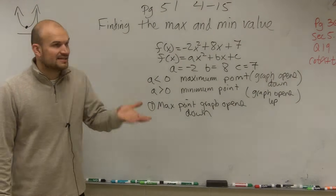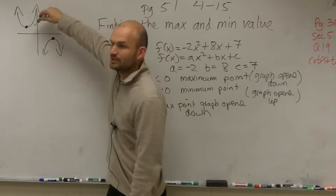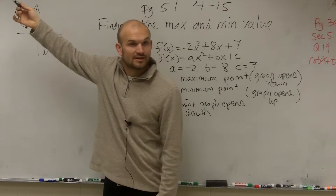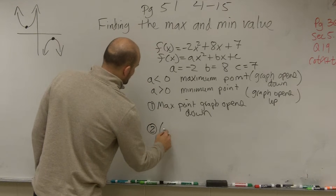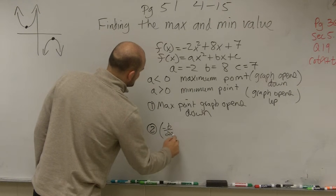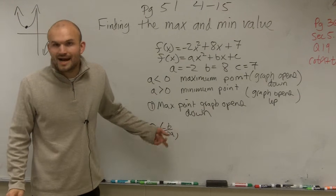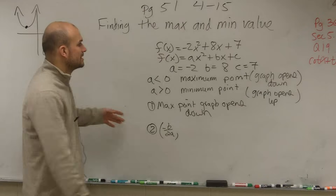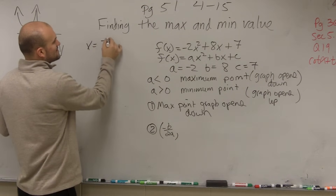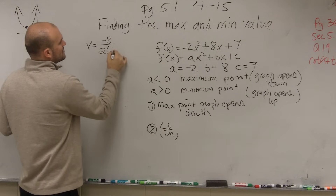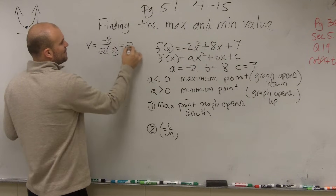The next thing is to define that point. Do you remember what this point is called? The vertex. Do you remember the formula for the vertex? It's a two-step process. The first point is opposite of b divided by 2a, which is our axis of symmetry. So x equals opposite of b, which is negative 8, divided by 2 times negative 2. So negative 8 divided by negative 4 is going to be positive 2.